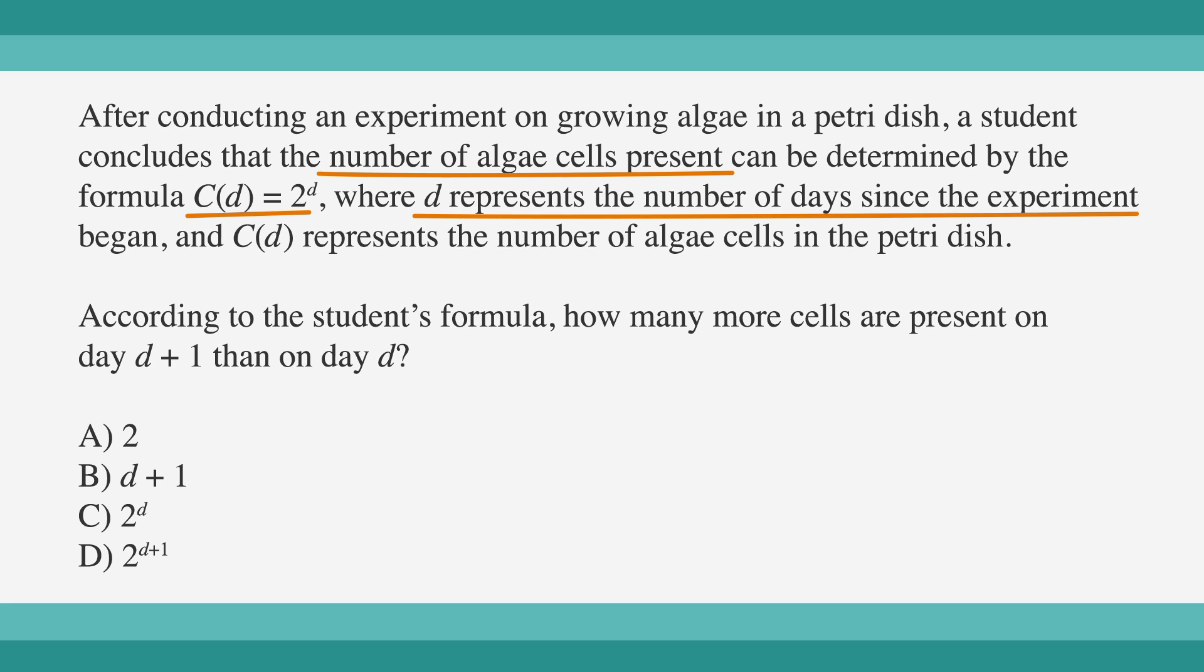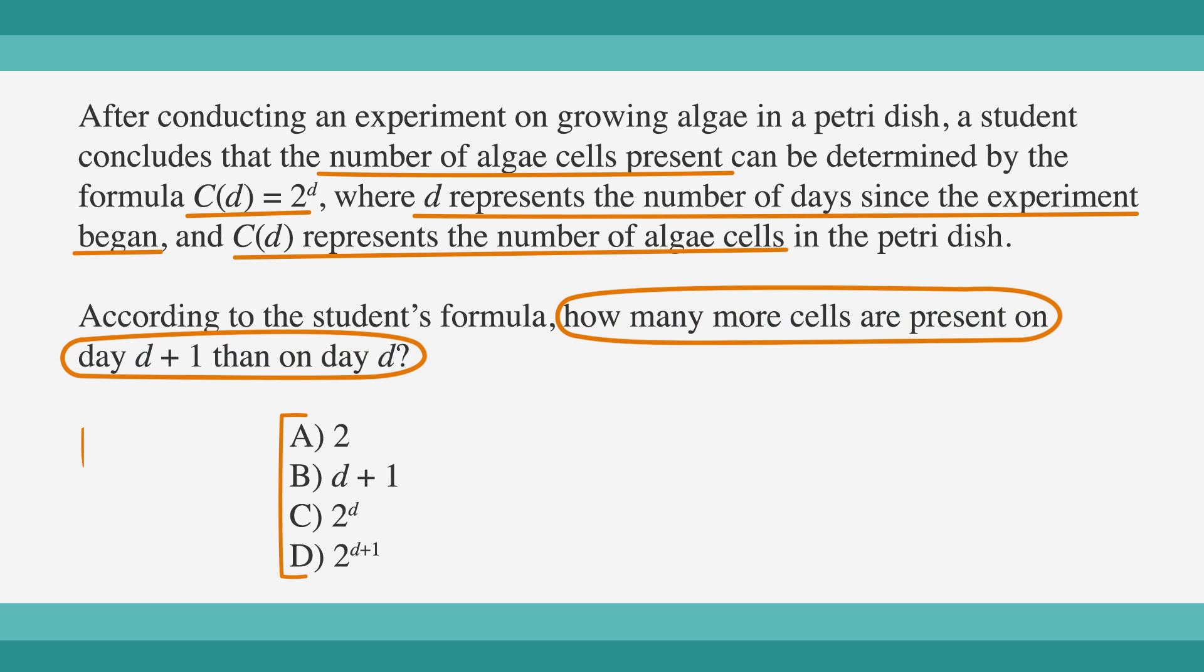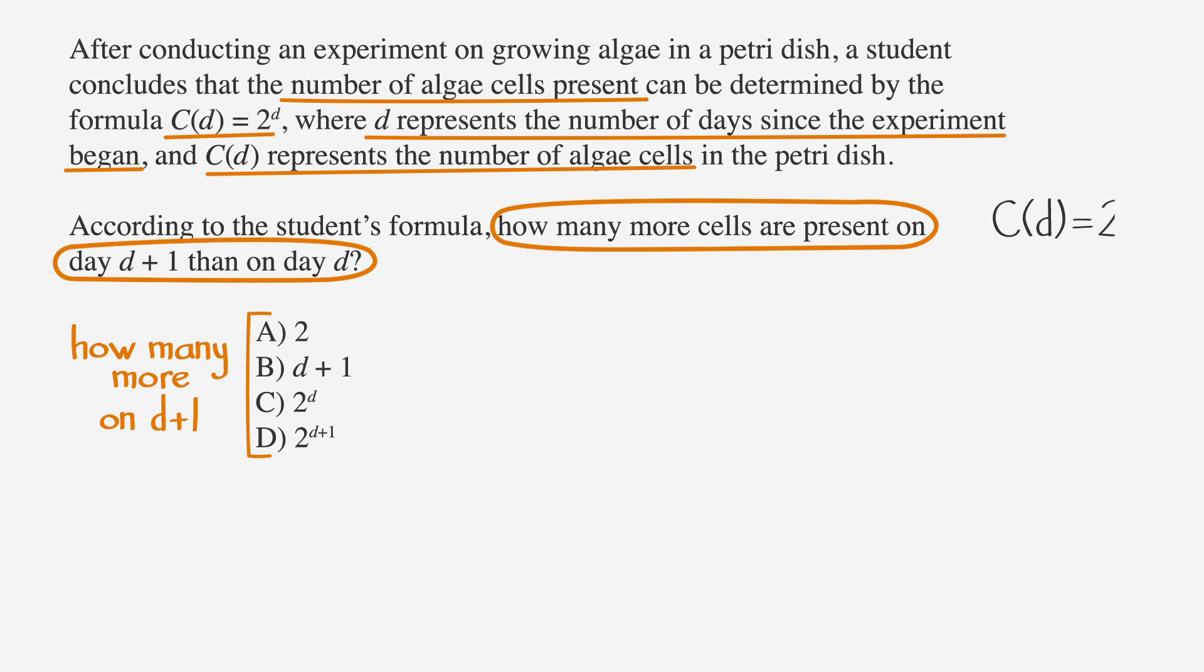We'll start by underlining the facts and circling the key words. Now, how should we label the answer choices? We need to find how many more cells are present on day d+1 than on day d. That's a little too long. Let's label the answer choices 'how many more on d+1'. Now, let's start by writing our formula down. We have a variable in the exponent and we have variables in some of the answer choices. This sounds like a job for the picking number strategy. Let's say d = 3.